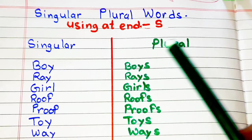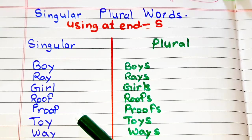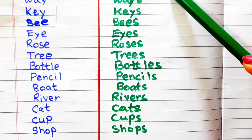Boy, boys. Ray, rays. Girl, girls. Roof, roofs. Proof, proofs. Toy, toys. Way, ways. Key, keys. Bee, bees.